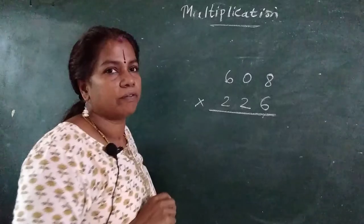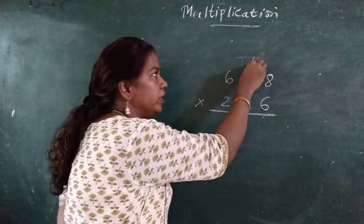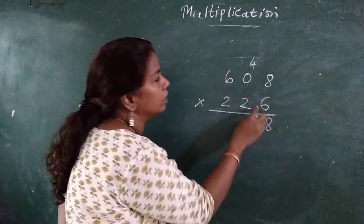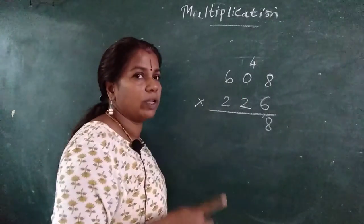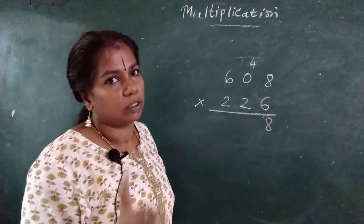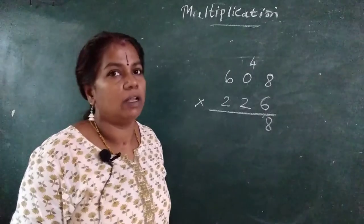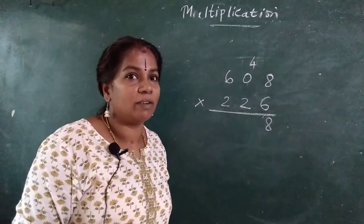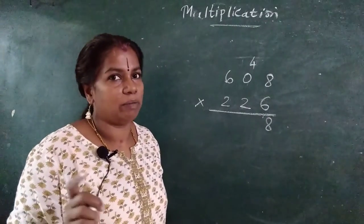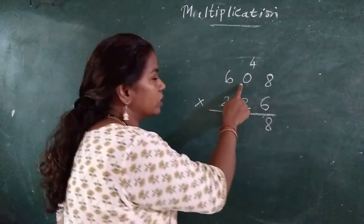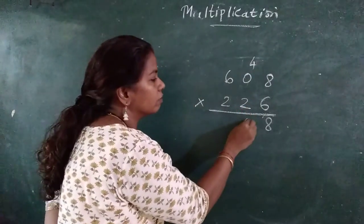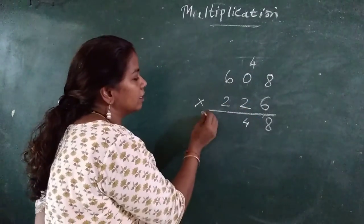6, 8's are 48. 4 here, 8 here. 6, 0's are 0. Think about this. When you are multiplied with 0, it will be 0. But when you add, it will be the same number. When you subtract, it will be the same number. But when you multiply, it will be 0. 6, 0's are 0, plus 4, 4. 6, 6's are 36.